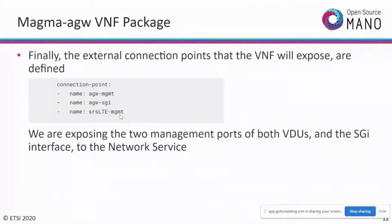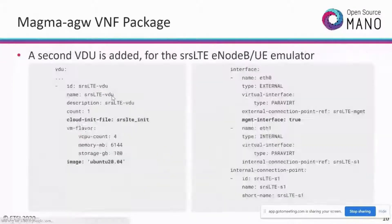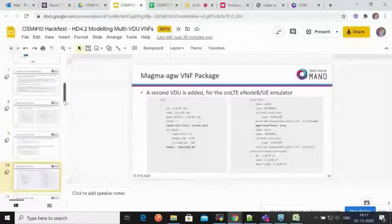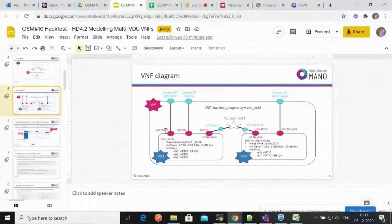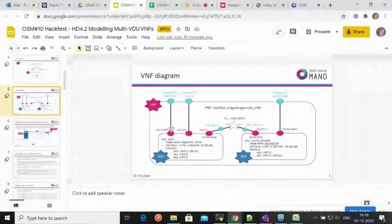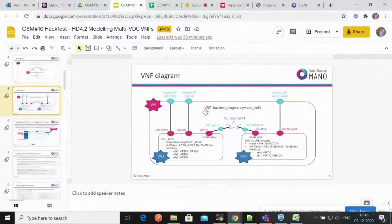These three connection points are declared under the connection points section: first two from the access gateway VDU, and the management of the SRS-LTE VDU. All these have been exposed. With the VNF done and ready, we now start moving into the network service.